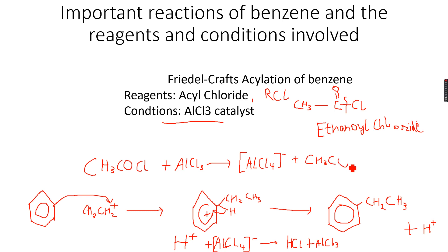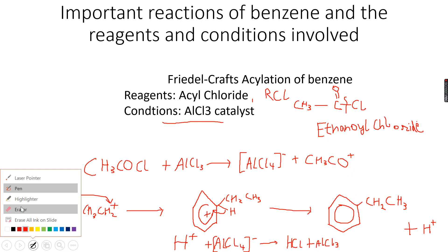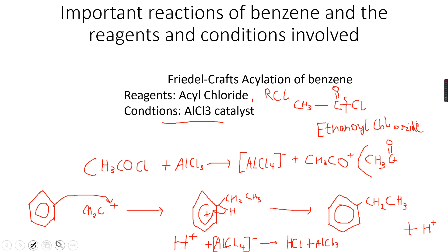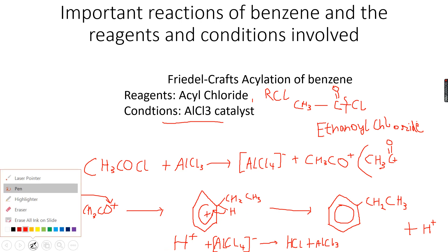We get CH3CO+ instead — this is our electrophile. Remember, the plus is on the carbon atom, not the oxygen atom. So we have the plus charge on this carbon atom, with CO over here. The benzene ring attacks this positive charge again — electrophilic substitution.